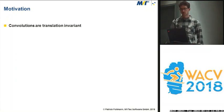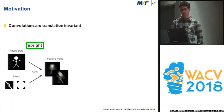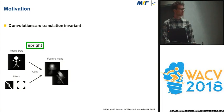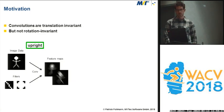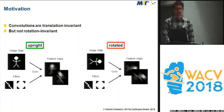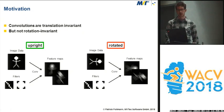Convolutions are, of course, translation invariant. If you apply two dummy filters to a dummy image, then you will get these feature maps. But if you rotate the image, then you will get two completely different feature maps, and so it's no surprise that in the end the classifier cannot interpret these feature maps correctly.